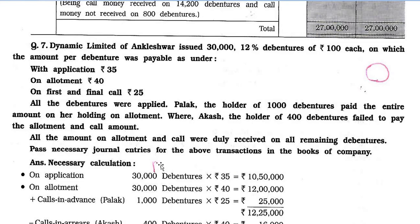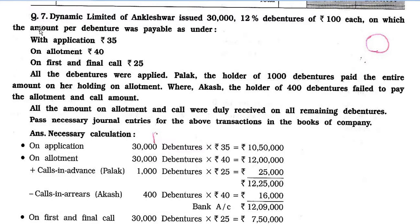Now, Question No. 7. Dynamic Limited of Ankleshwar issued 30,000 12% debentures of Rs. 100 each, on which the amount per debenture was payable as: with application Rs. 35, on allotment Rs. 40, on first and final call Rs. 25. All debentures were applied for. The holder of 1,000 debentures paid the entire amount on allotment (call-in-advance). The holder of 400 debentures failed to pay the allotment and call amount. All amounts on allotment and call were duly received on remaining debentures.